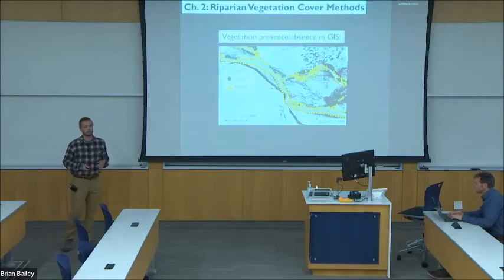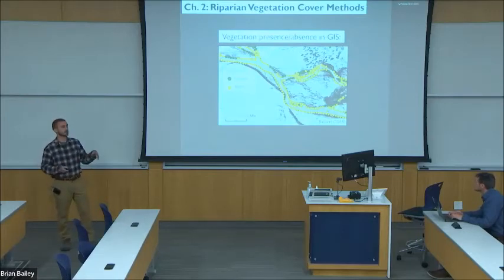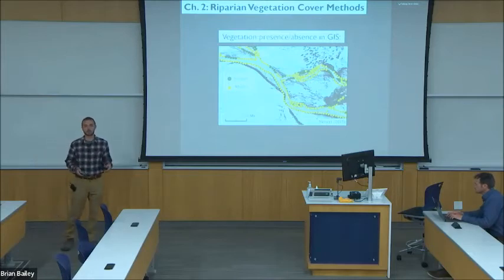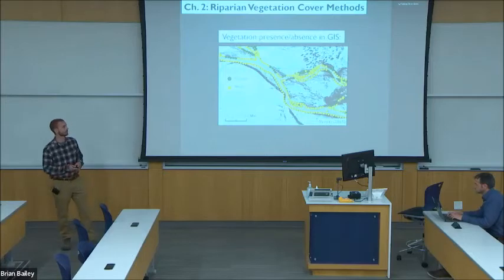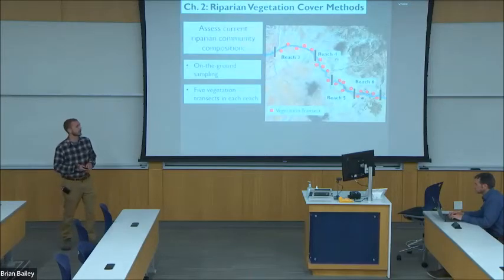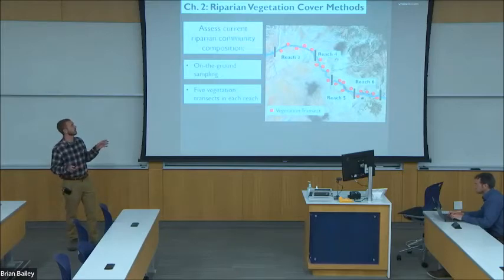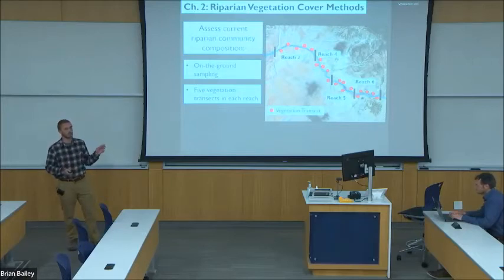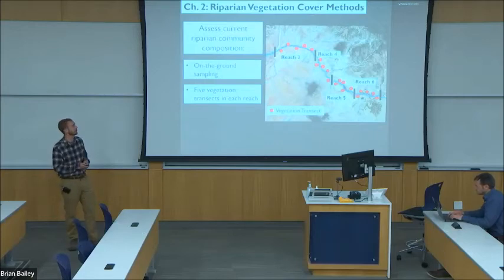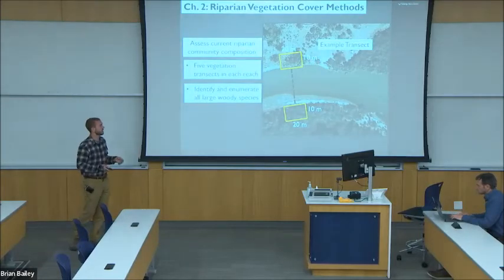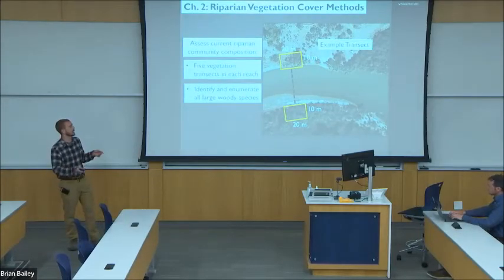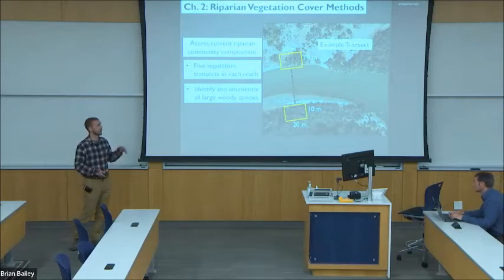For riparian vegetation analysis, I'll use GIS to create equally spaced transects along the active channel of each time period that denote the presence or absence of vegetation. I will also supplement current vegetation community assessment by doing on-the-ground sampling at five transects in each geomorphic reach to determine community composition. At each transect, I will identify and enumerate all woody species in a 10 by 20 meter area on both sides of the active channel.